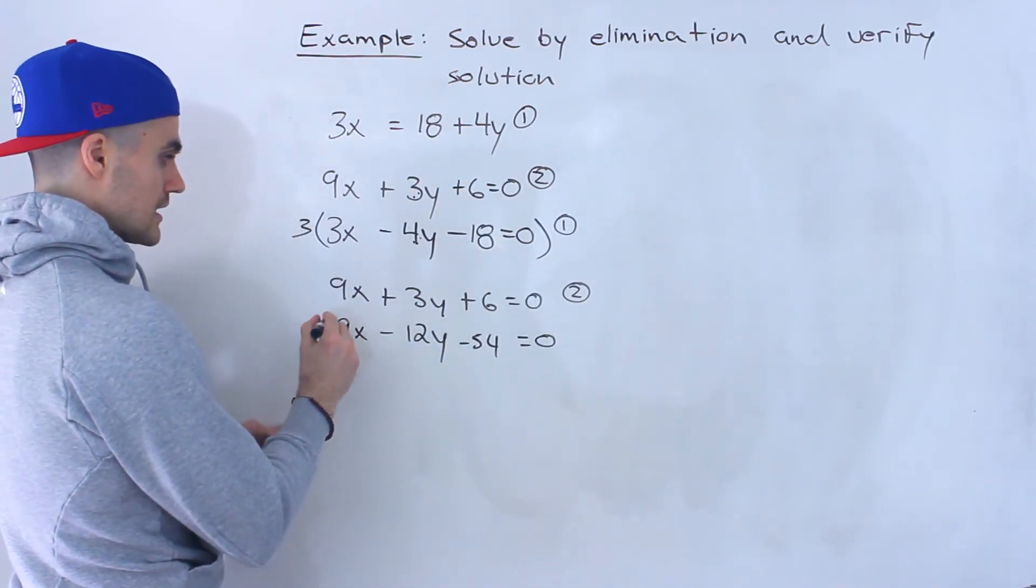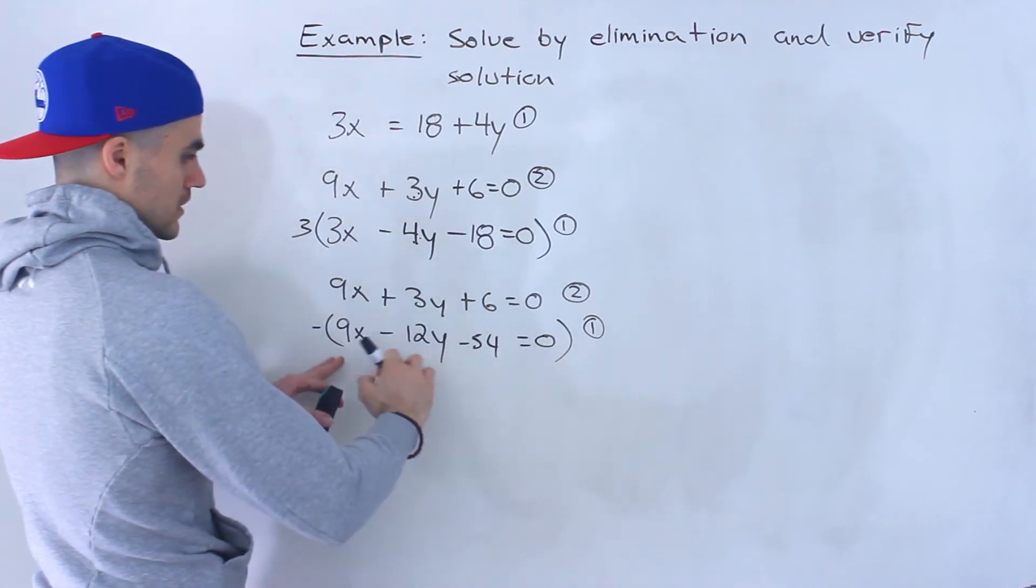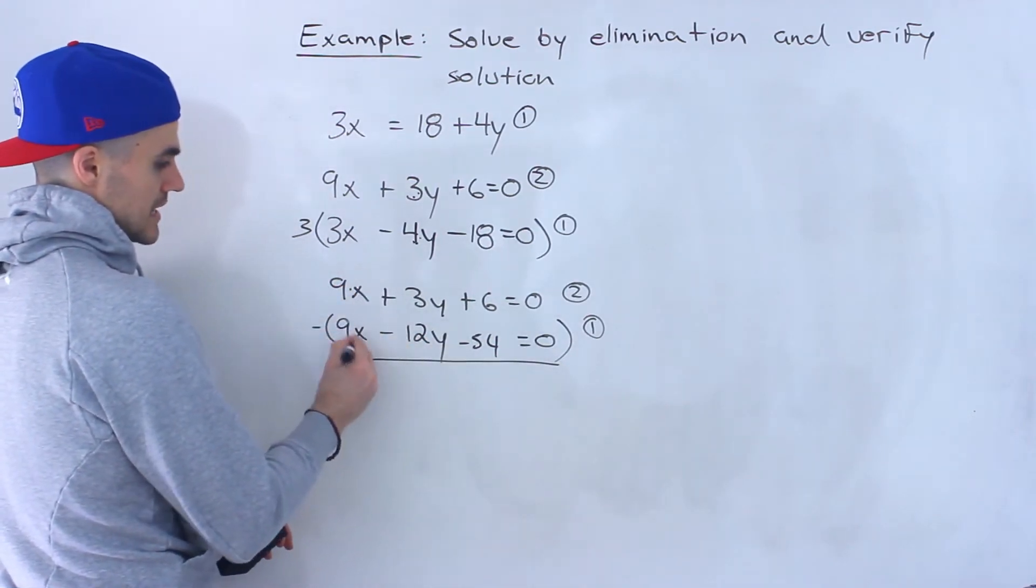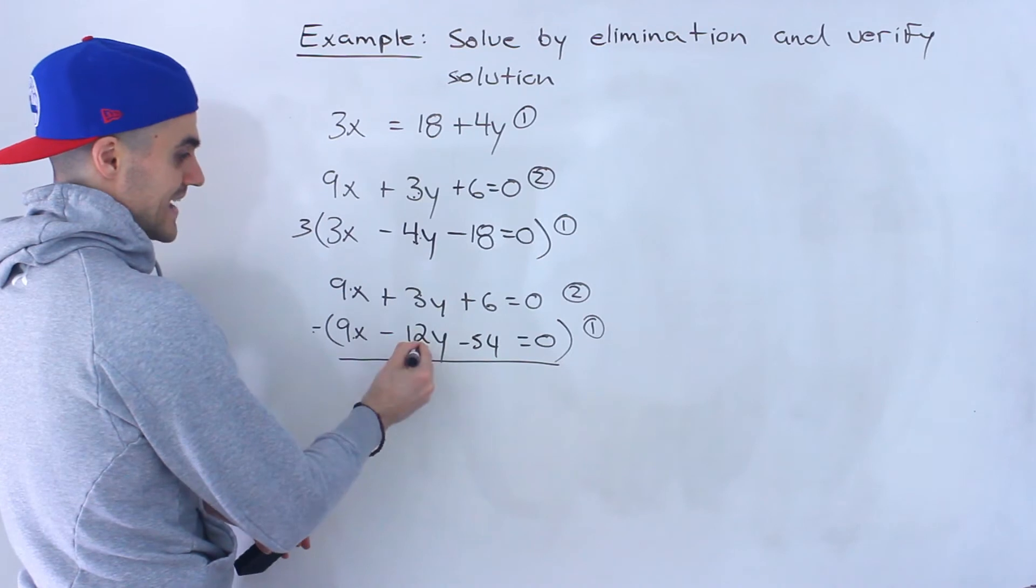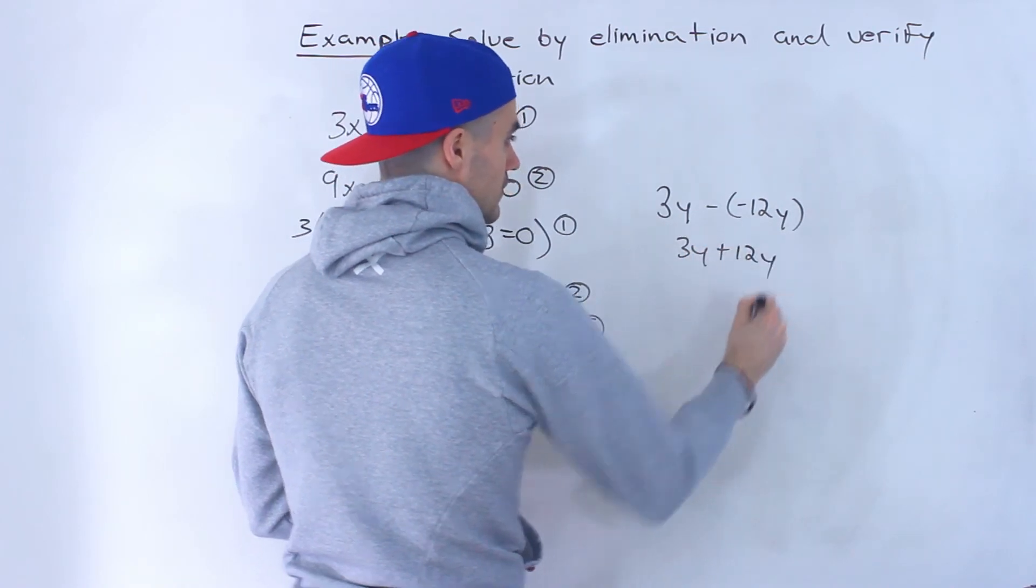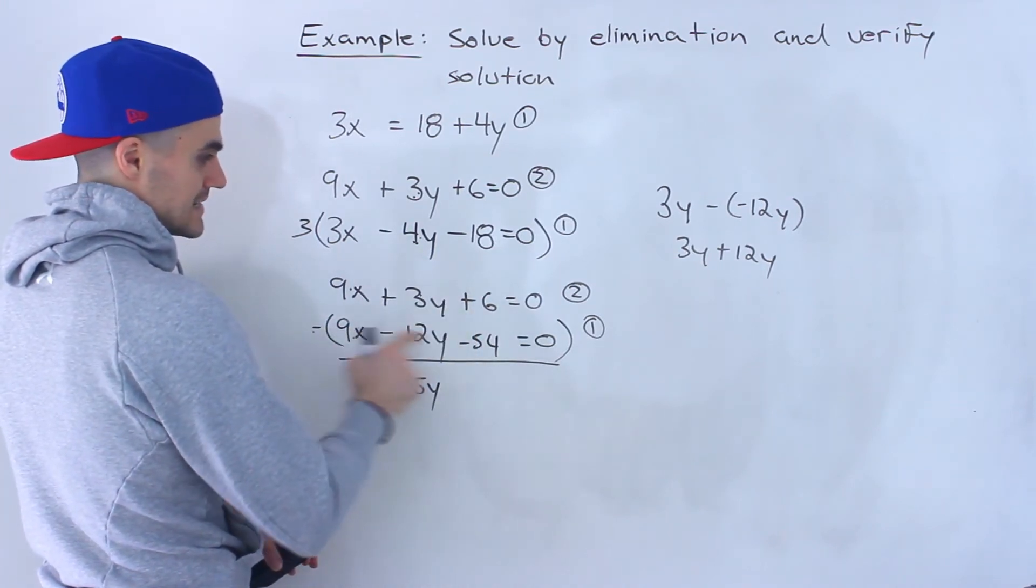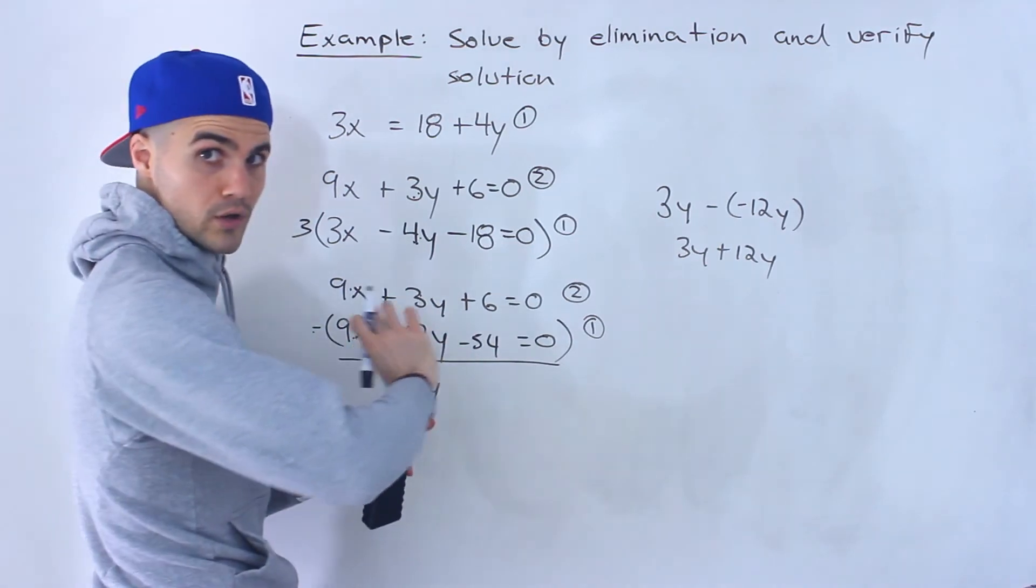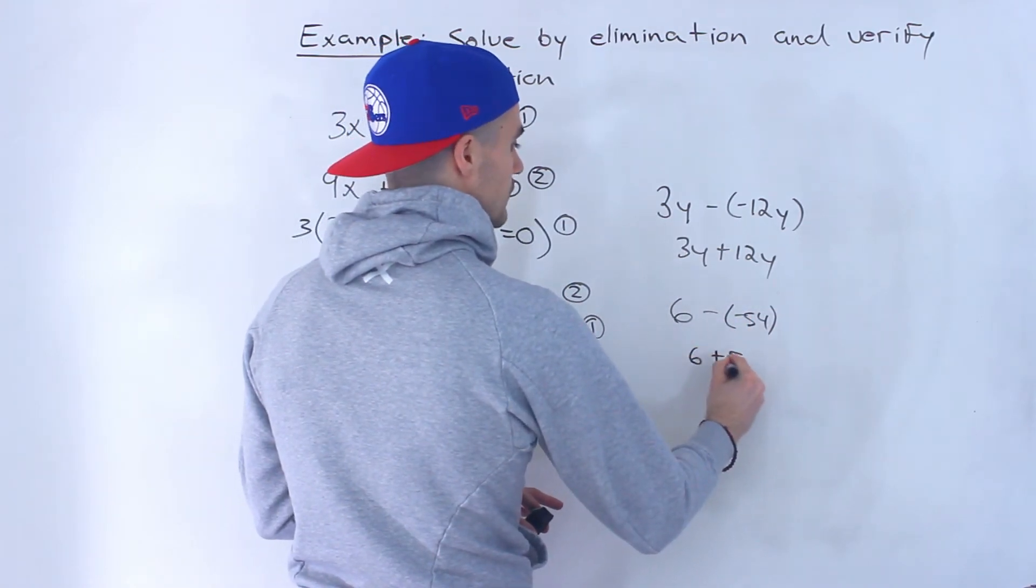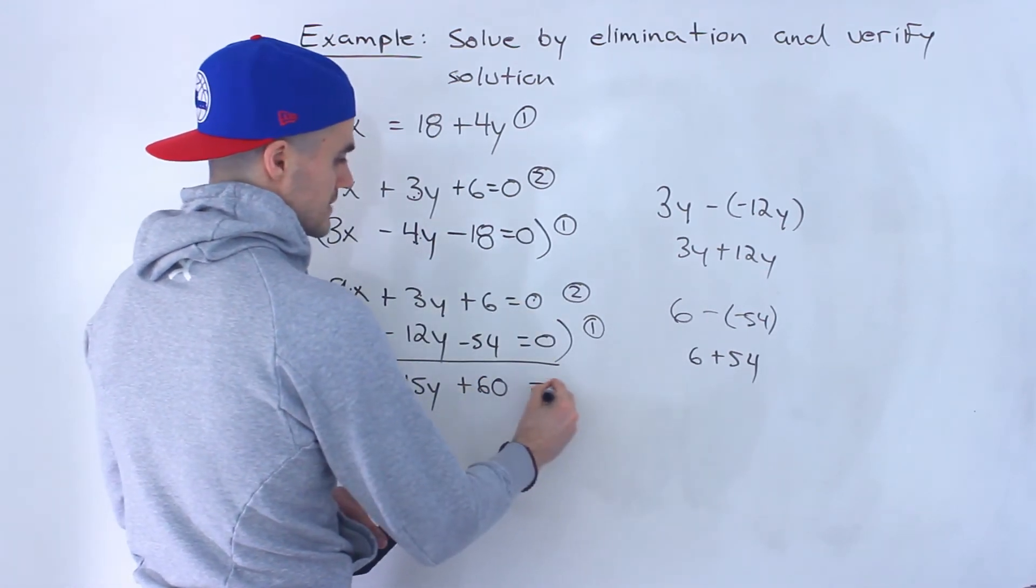Now what we could do is subtract these lines from each other, so the 9x's notice are going to net out to 0. 9x minus 9x is 0. 3y minus negative 12y would be like 3y plus 12y, which would give us positive 15y. Then we'll have 6 minus negative 54, which would be like 6 plus 54. So that would end up being positive 60. And then 0 minus 0, that's still just 0.